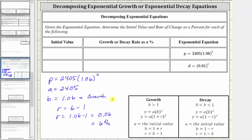To complete the table, the initial value is 2,405. We have exponential growth, and therefore the growth rate is 6%.